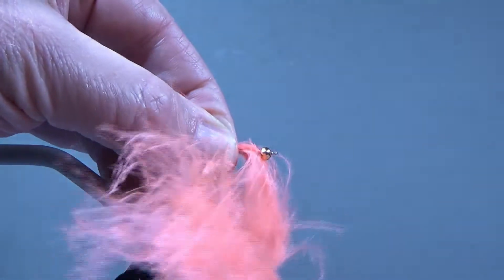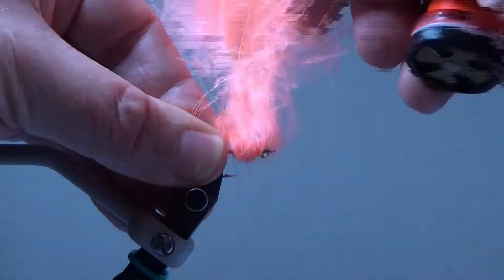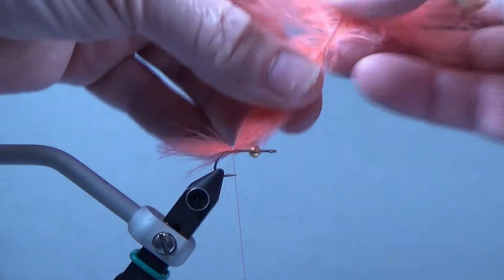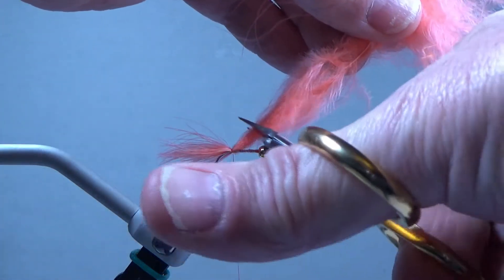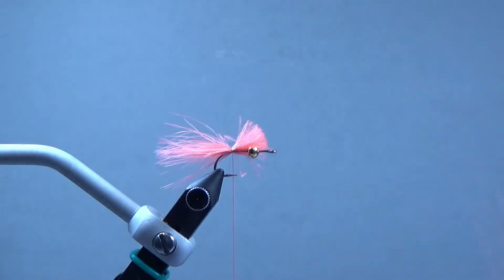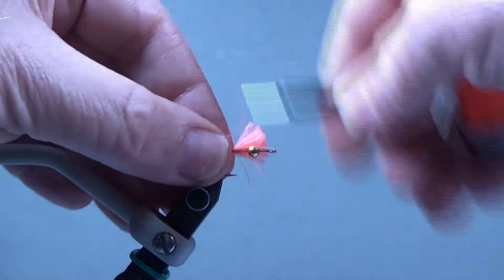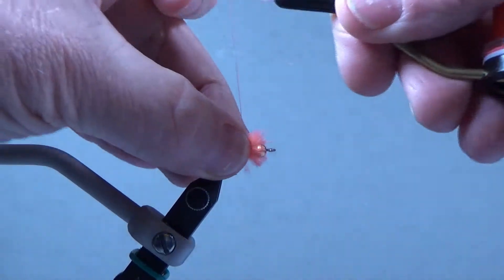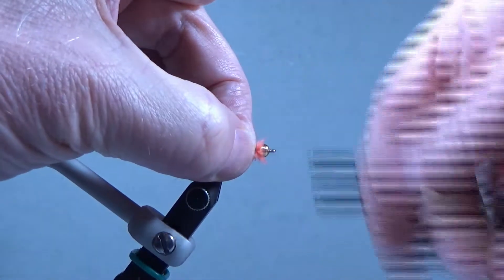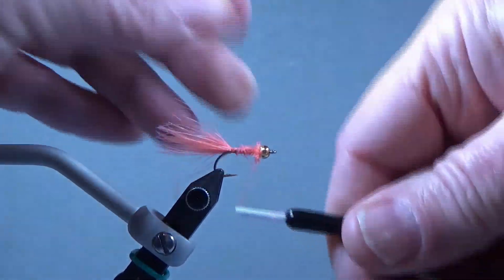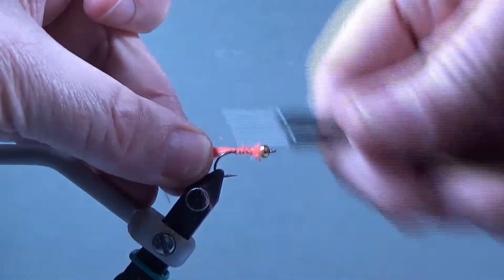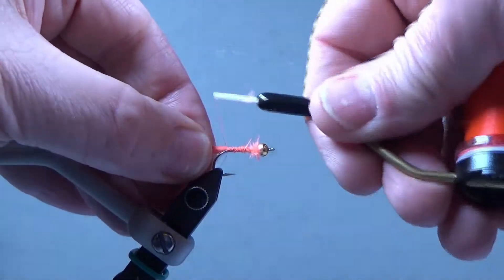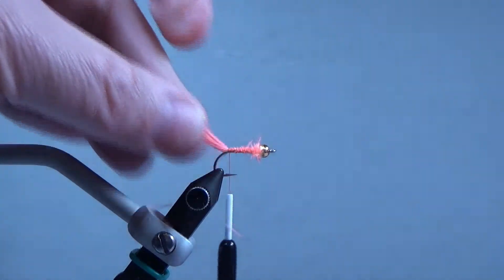We'll tie this in here back at the bend. I'm going to cut some of this out of the way now. And I'm going to just run the thread up over this marabou just to build a little body. And it'll all be covered with chenille and then a hackle feather so we'll be fine.